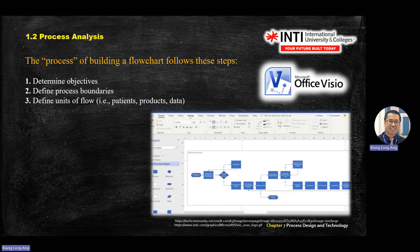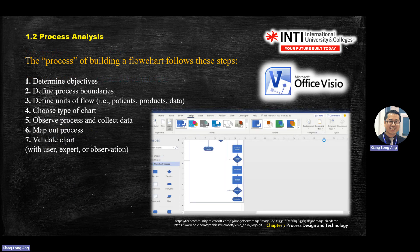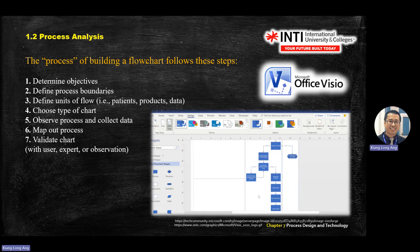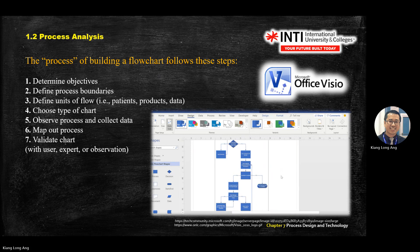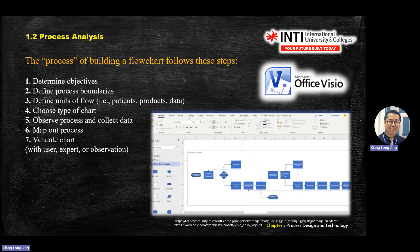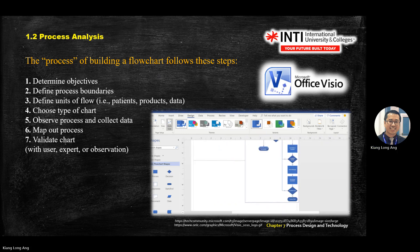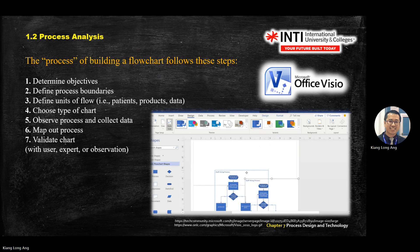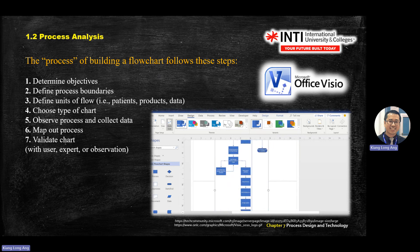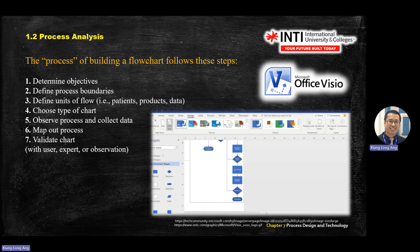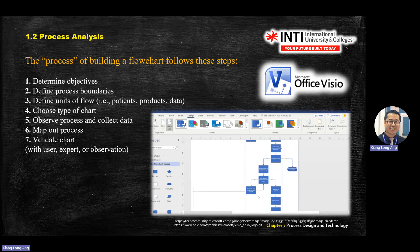If you are doing your FYP, process flow charting will help you build your research flow chart. You determine objectives, process boundaries, and units. You decide what kind of chart to use — decisions are typically shown as diamond shapes. There are free online sources for process flow chart tools you can explore.